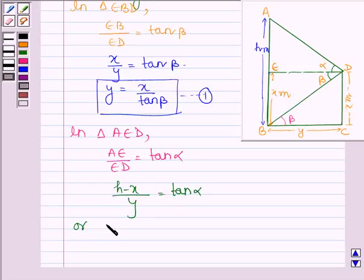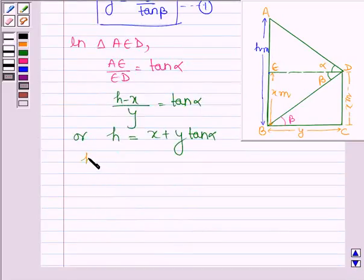Or it can further be written as H is equal to x plus y tan alpha. Now, on substituting the value of y from equation number 1 we have H is equal to x plus x divided by tan beta into tan alpha and this is from equation number 1.